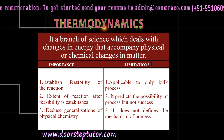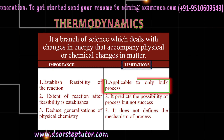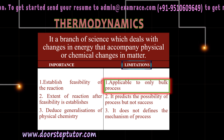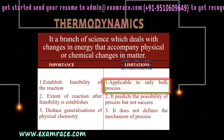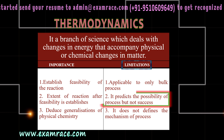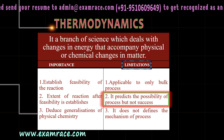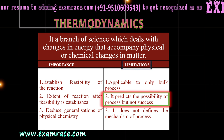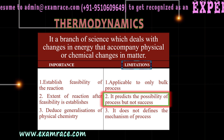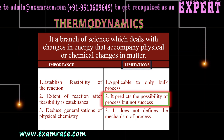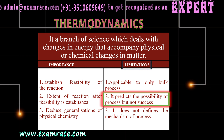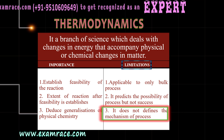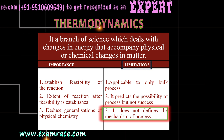It has several limitations. It is applicable to only bulk processes; it is not applicable to smaller atoms. It also helps in predicting the possibility of a process but not its rate, that is whether the reaction will occur or not it doesn't decide the speed. It also defines the mechanism of the process.